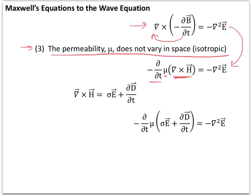We can do a straightforward substitution: we know that the curl of H equals the current that flows plus the rate of change of the electric flux vector — the displacement current. Substituting this back into the equation gives us the next step along the direction we're going.